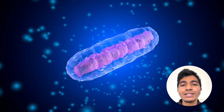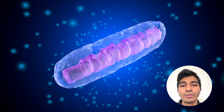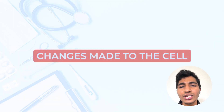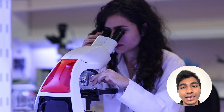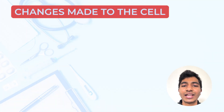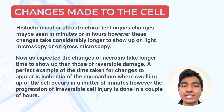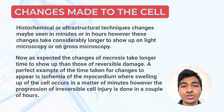Now once the cell is injured or once the cell is set to follow the path of necrosis, there are a few changes made to the cell. These changes are visible on light microscopy, electron microscopy, or histochemical ultrastructural techniques. These changes usually show up in minutes but some can show up in hours, and as we expect with irreversible cell injury, the changes will take much longer to show up than those of reversible cell injury.